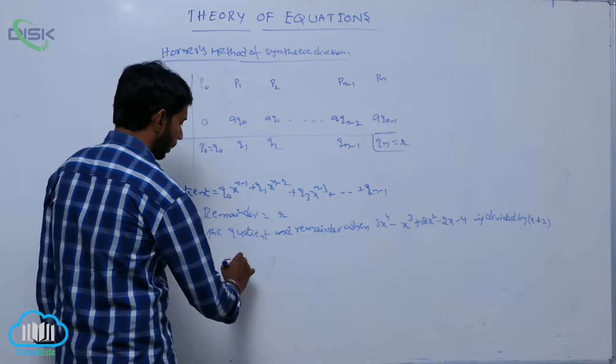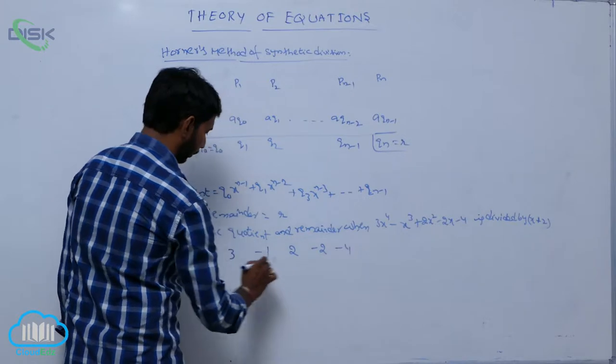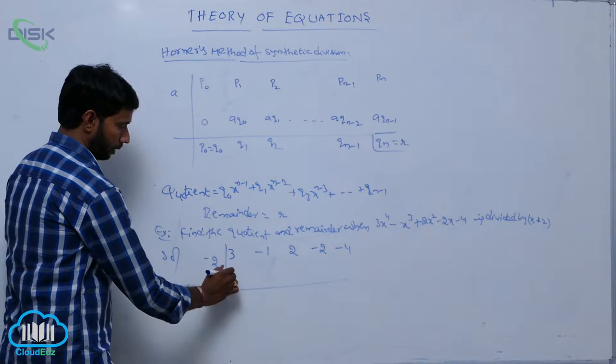Here the coefficients are 3, -1, 2, -2, -4. When divided by x + 2, there is -2. Zero. 3 plus 0 equals 3.